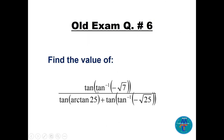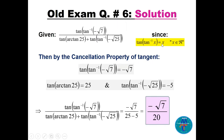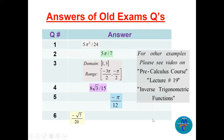Question six: find the value of tan(tan⁻¹(−√7)) · tan(arctan(25)) + tan(tan⁻¹(−√25)). Since tan(tan⁻¹(x)) = x for all real x, we apply cancellation directly: tan(tan⁻¹(−√7)) = −√7, tan(arctan(25)) = 25, and tan(tan⁻¹(−√25)) = −√25 = −5. So the expression becomes −√7 · 25 + (−5)... simplifying gives −√7/20 as the final answer.